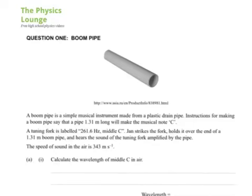A boom pipe is a simple musical instrument made from a plastic drain pipe. Instructions for making a boom pipe say that a pipe 1.31 metres long will make the musical note C. A tuning fork is labelled 261.6 Hz, middle C. Jan strikes the fork, holds it over the end of the boom pipe, and hears the sound of the tuning fork amplified. The speed of sound in air is 343 metres per second. Calculate the wavelength of middle C in air.